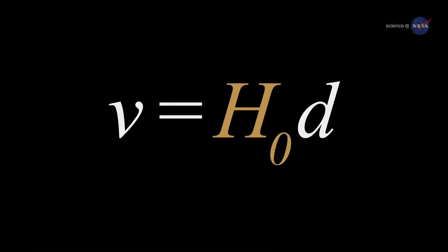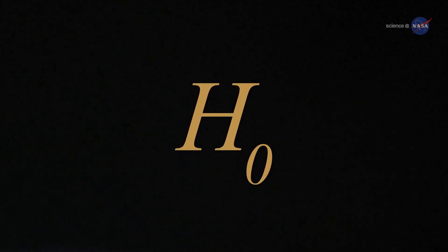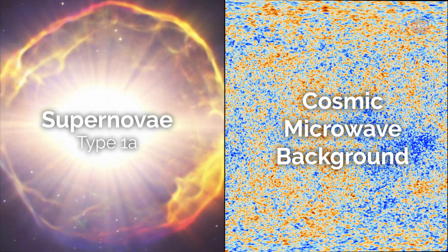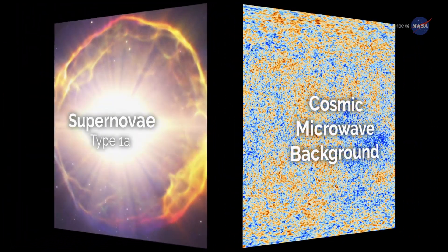Its current rate of expansion is called Hubble's Constant or H-knot. There are two leading ways to measure H-knot, and for 15 years they more or less agreed with one another. Not anymore, and that's a big deal. Here's why.